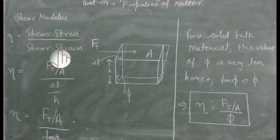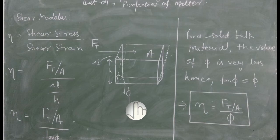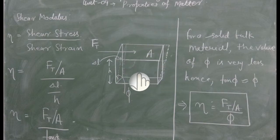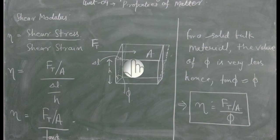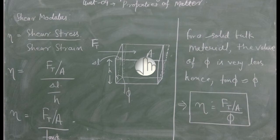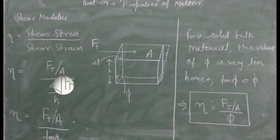Shear stress اور shear strain کی جب بات کریں گے تو اس کے لئے یہ جو figure ہم نے دکھایا ہوا ہے اسے اچھے سے دیکھیں۔ یہ ایک cuboid — گھناکار آپ کا sample ہے اور اس کے ایک فلق کے اوپر ہم نے tangential force Ft لگایا ہے — surface کے direction میں۔ اس force کے لگانے کے کارن اس کے اکان کے چھتر پر جو پرتیان بل اتپن ہوگا وہ shear stress ہوگا۔ Shear stress کے لئے definition: Ft upon A۔